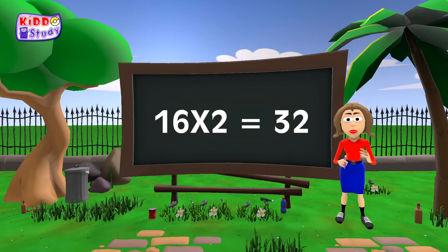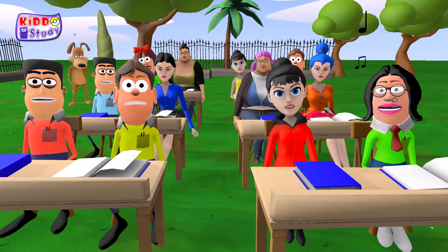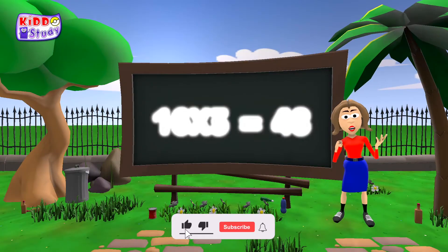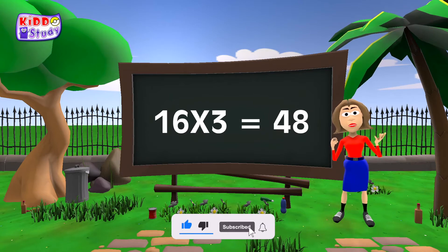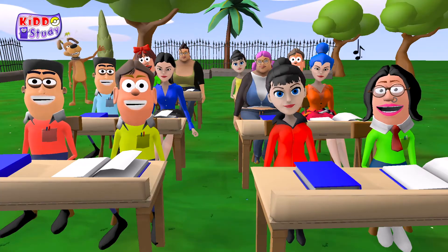Sixteen twos are thirty-two, sixteen twos are thirty-two. Sixteen threes are forty-eight, sixteen threes are forty-eight.